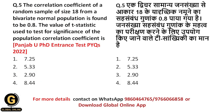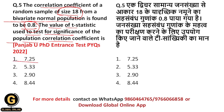The correlation coefficient of a random sample of size 18 from a bivariate normal distribution is found to be 0.8. The value of the t-statistic used to test for significance of the population correlation coefficient is. Here the correlation coefficient value is 0.8 from a bivariate normal population, where sample size is 18. The t-test is done to determine the significance of the population correlation coefficient. The options are 7.25, 5.33, 2.90, 8.44.